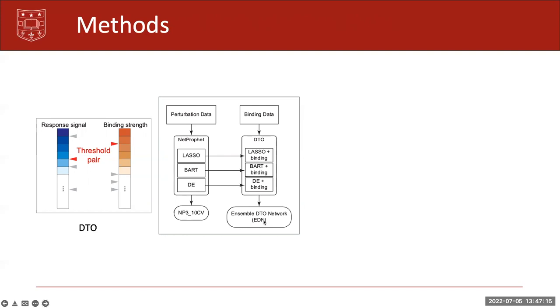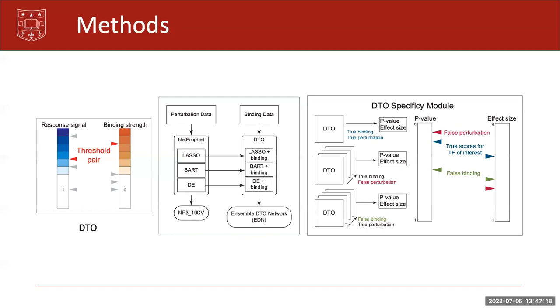And the way we combine those three networks is using DTO specificity module. The basic idea of the specificity module is to test if the overlap in the DTO between binding and perturbation evidence for the TF is specific to the TF.